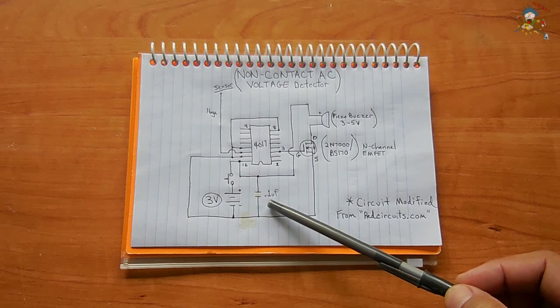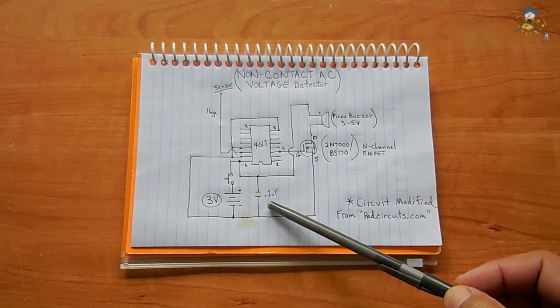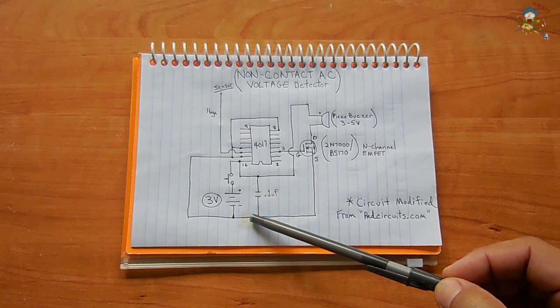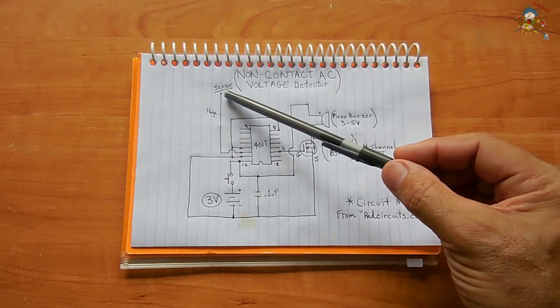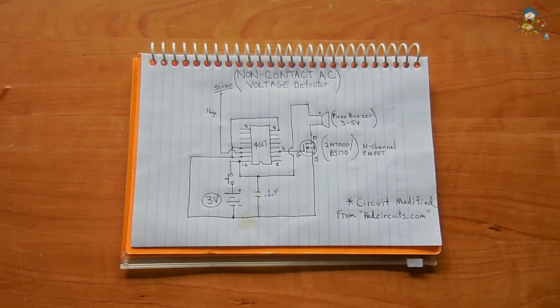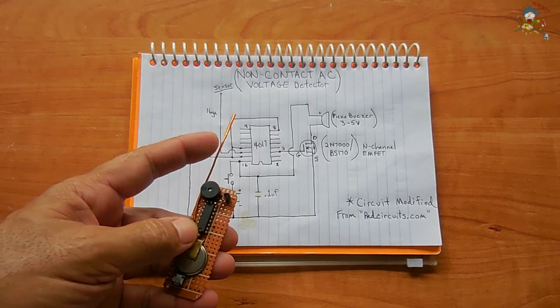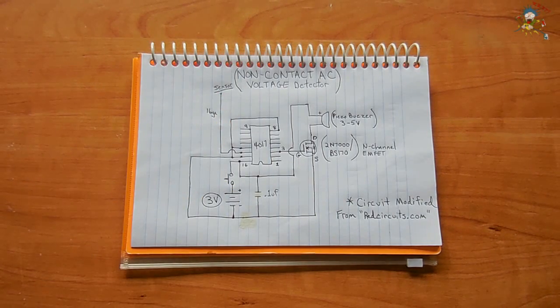Across the battery, across the power rails, you have this 0.1 microfarad or 104 capacitor, and that adds a little bit of stability across the power rails. The sensor wire is only around two and a half inches long like you see here, and it's 16 gauge wire.